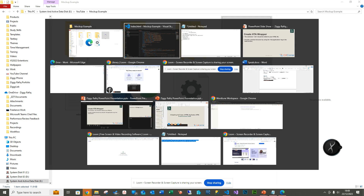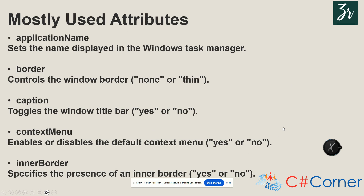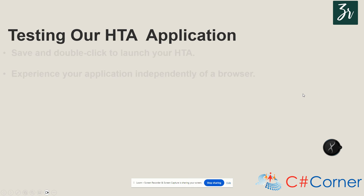Moving on, we customized the application using the attributes we've seen in the code: the application name, the border, the caption which toggles the window title bar, the context menu which enables the default menu, and the inner border. These attributes allow us to tailor the HTA application's appearance and behavior.